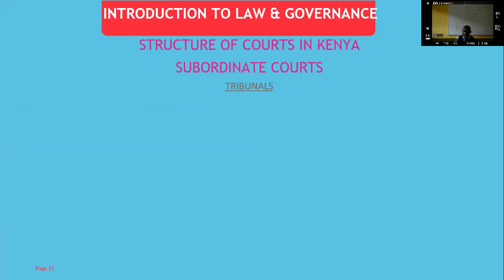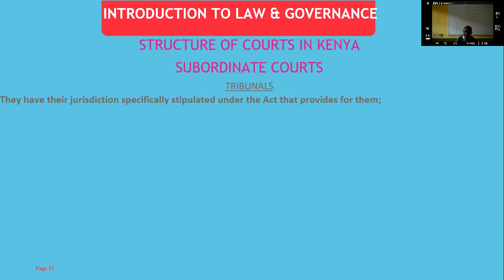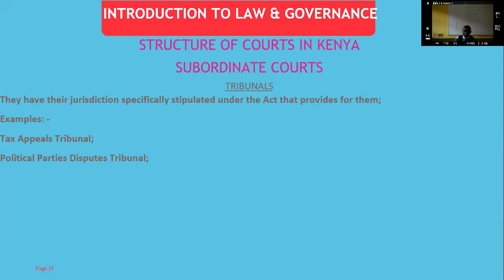Now let's look at tribunals. These usually have jurisdiction stipulated in the act that provides for them — for example, the Tax Appeals Tribunal Act confers jurisdiction on the Tax Appeals Tribunal to hear specific matters. Examples of tribunals include the Tax Appeals Tribunal, the Political Parties Disputes Tribunal, the Rent Restriction Tribunal, and the Business Premises Rent Tribunal, among many others that can be found at www.kenyalaw.org.